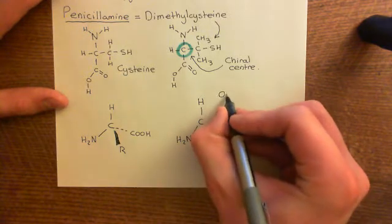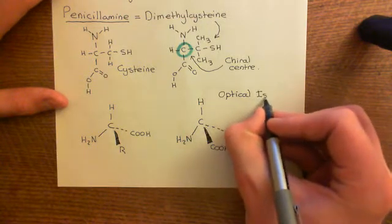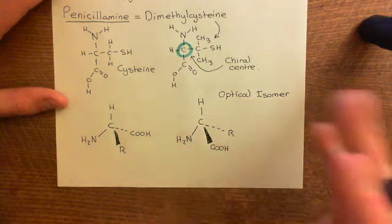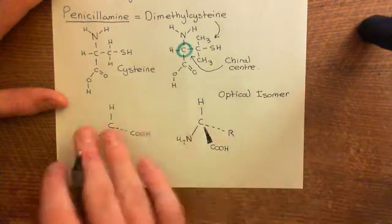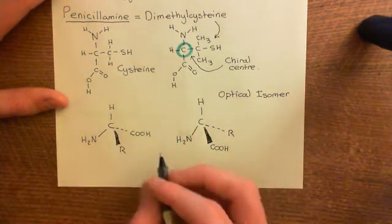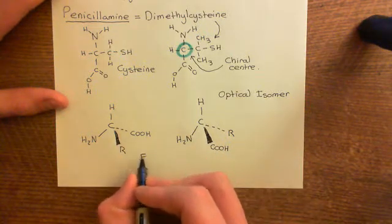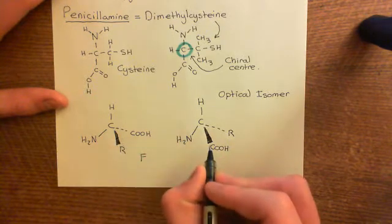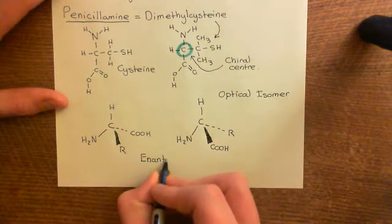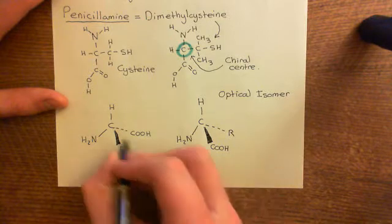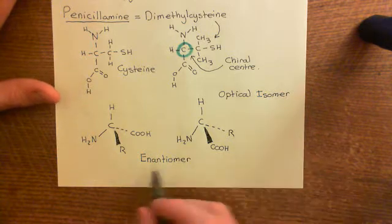They're called optical isomers of one another — specifically, they are enantiomers. Optical isomer is a broad term covering many cases of isomerism, but these two are beautiful optical isomers because one is the mirror image of the other. If this molecule were to look in the mirror, the molecule in mirror-land would be the other one. So this molecule, dimethylcysteine, has these two enantiomers.